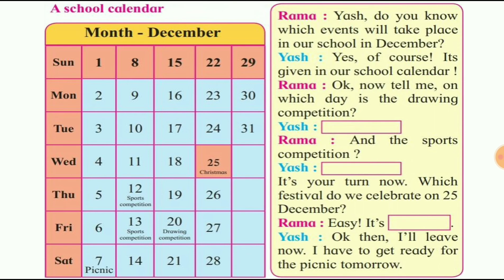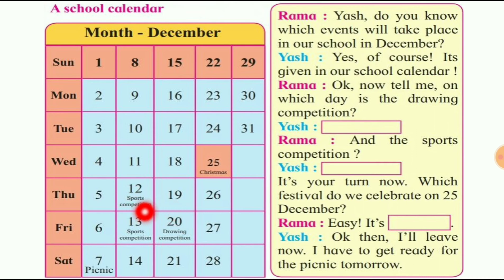जब हमें tally करना होता है तो यह पूरा देखना पड़ता है — कौन सी date को Sunday है और कितने Sunday आ रहे हैं. कभी-कभी कम भी आते हैं, कभी-कभी ज़्यादा. यहाँ पर 25 को Christmas लिखा है, 12 और 13 को sports है, 20 को drawing competition, और picnic भी है.